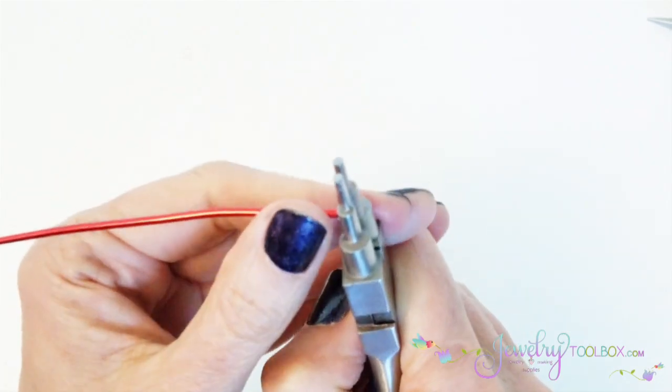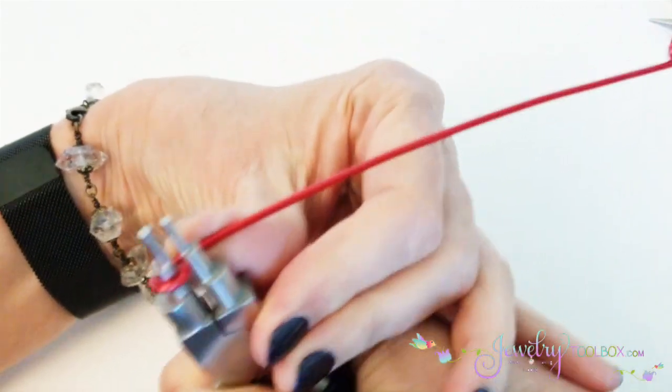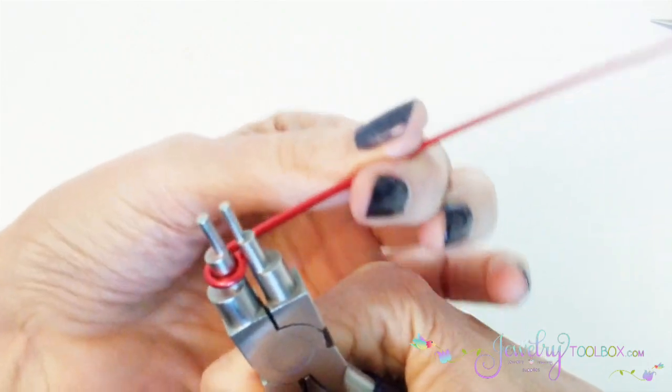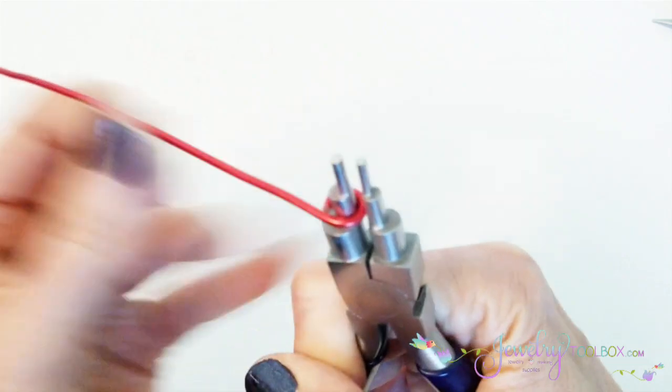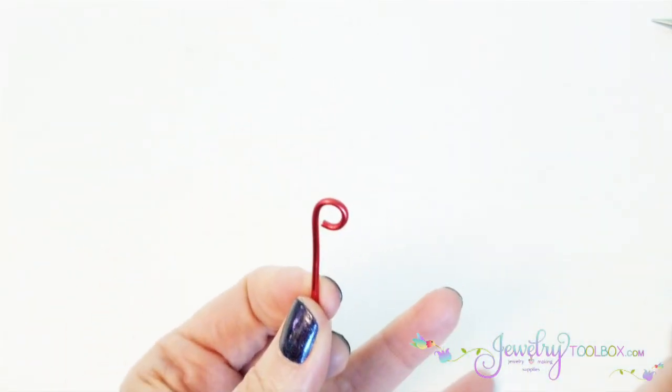Once you've got that just start pushing the wire against the jaw. Push the wire all the way around until it meets. Open the jaw, rotate it back, and you'll have to give it another little push. Then take it off of the tool.